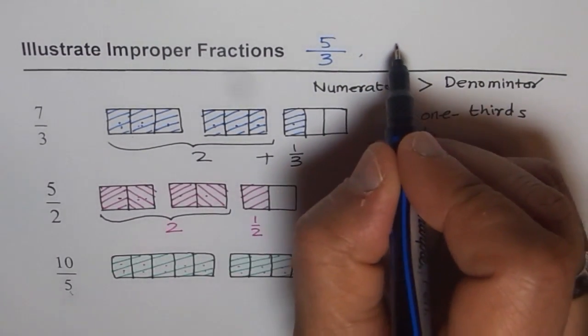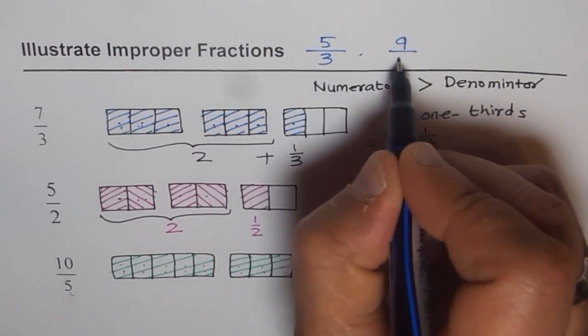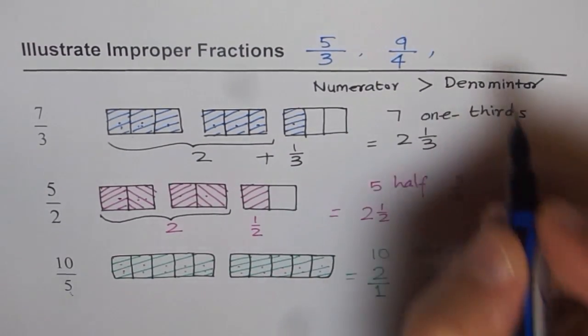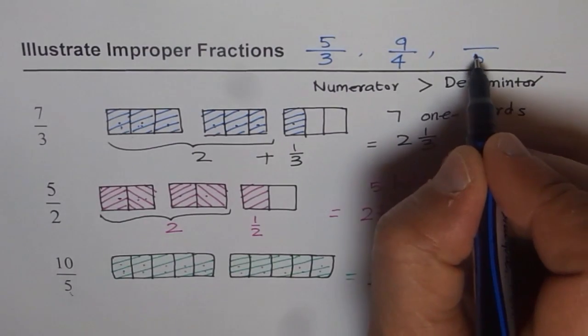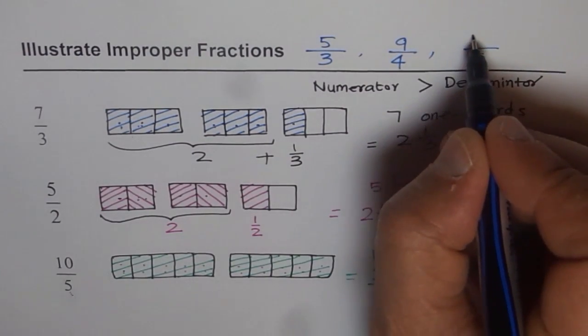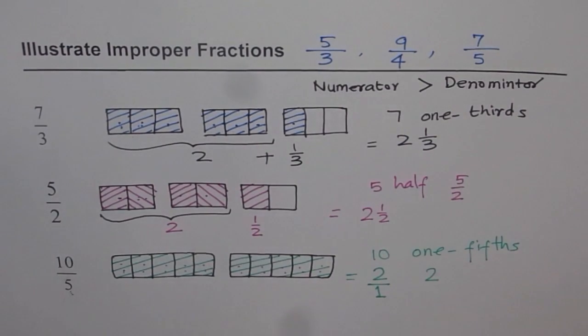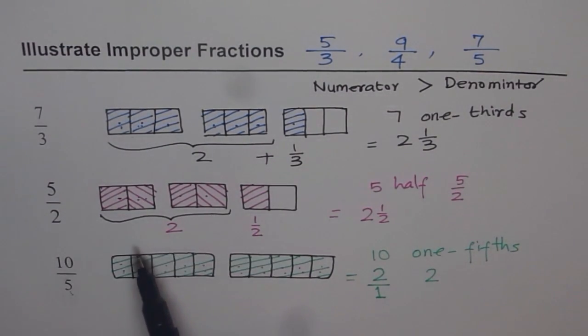Similarly, you can try numbers with 9 over 4, right? Or even something with 5. What should I write there? Let it be 7. So try these and then convert them to mixed numbers. I hope you enjoy.